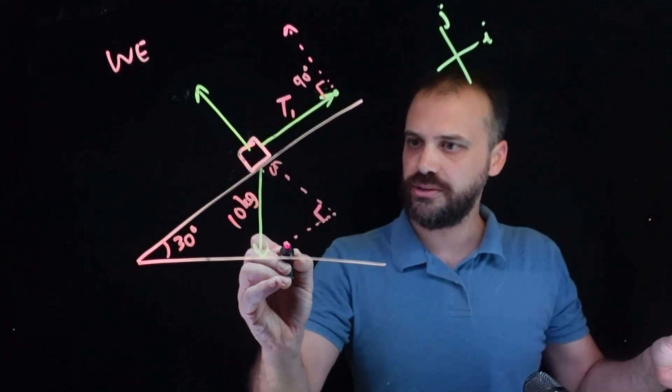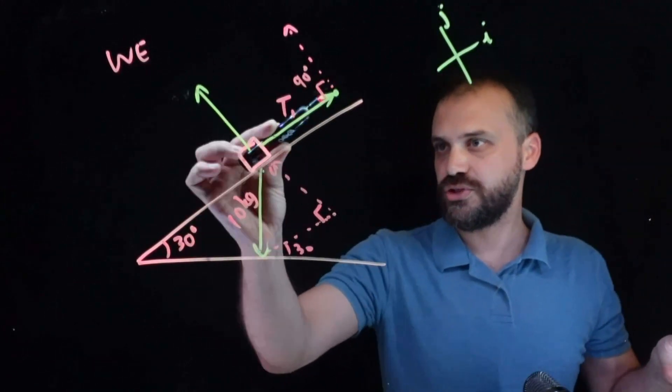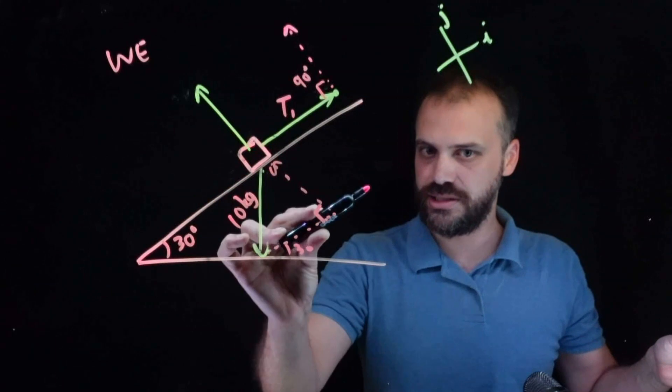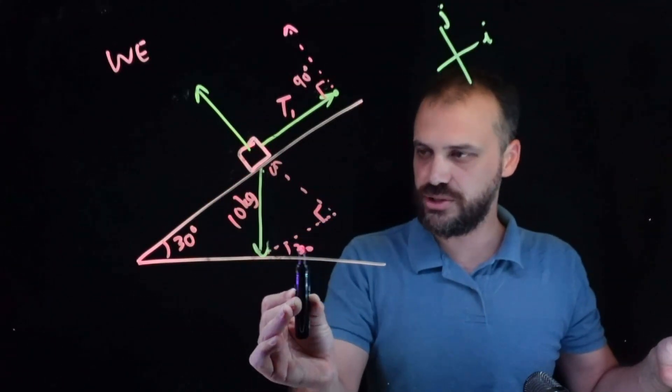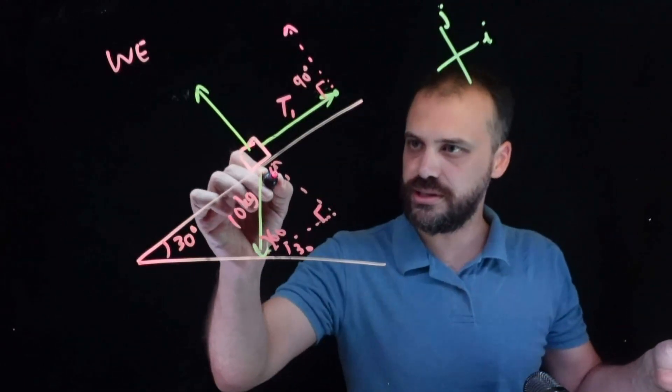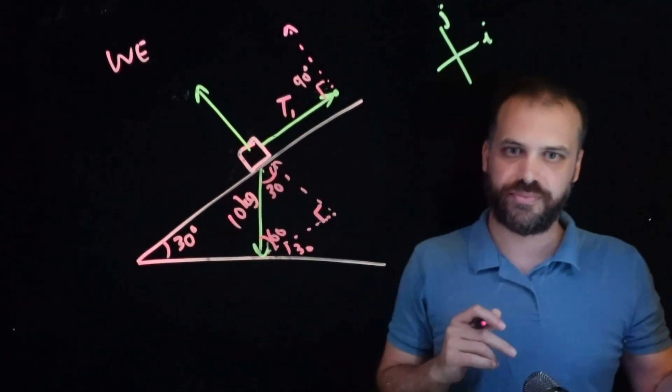This angle is clearly 30 degrees, because the string is in line with the inclined plane, which is in line with this one here. So that's 30 degrees because that's 30 degrees, which means that this is 60 degrees, which means that this is 30 degrees.